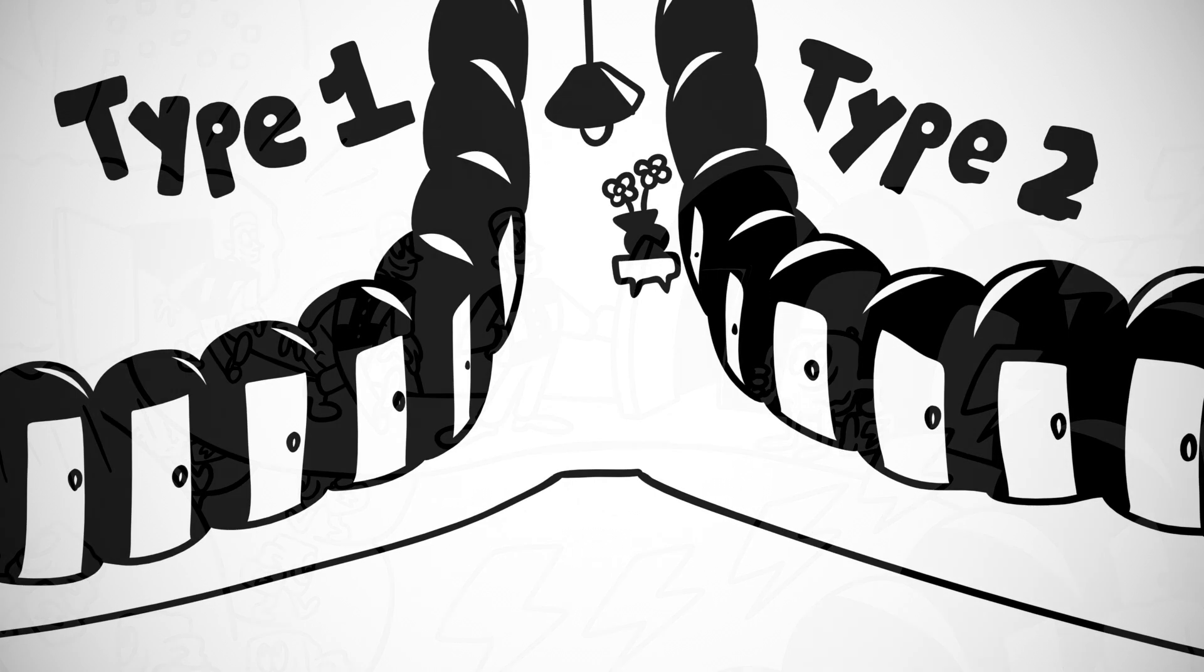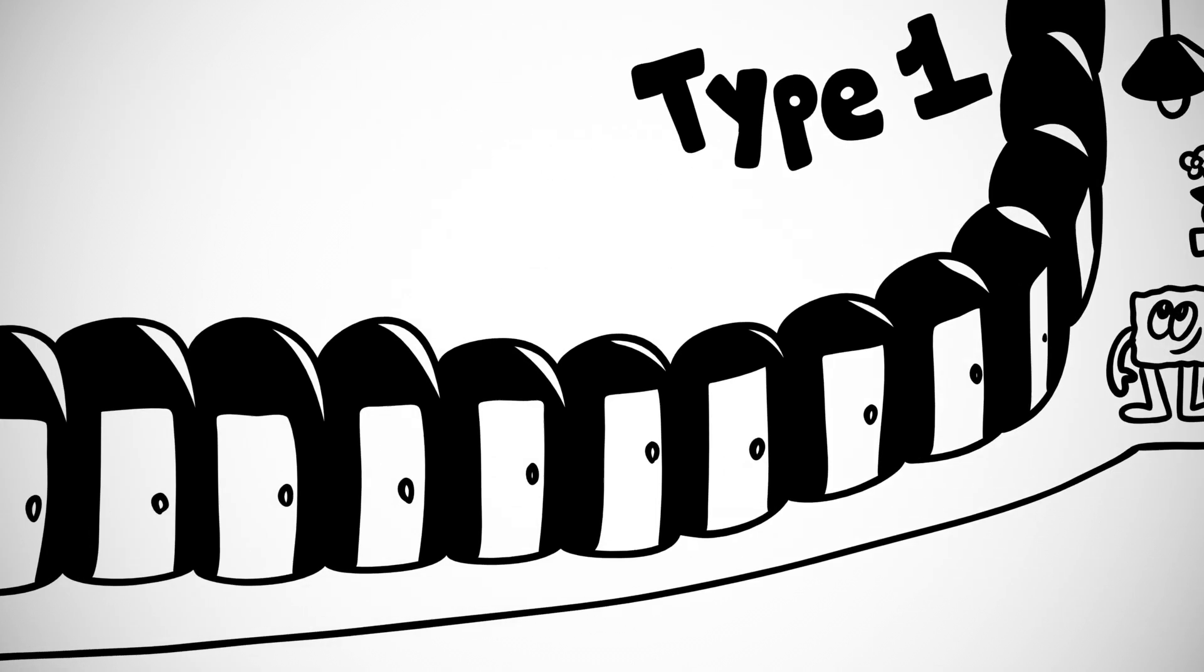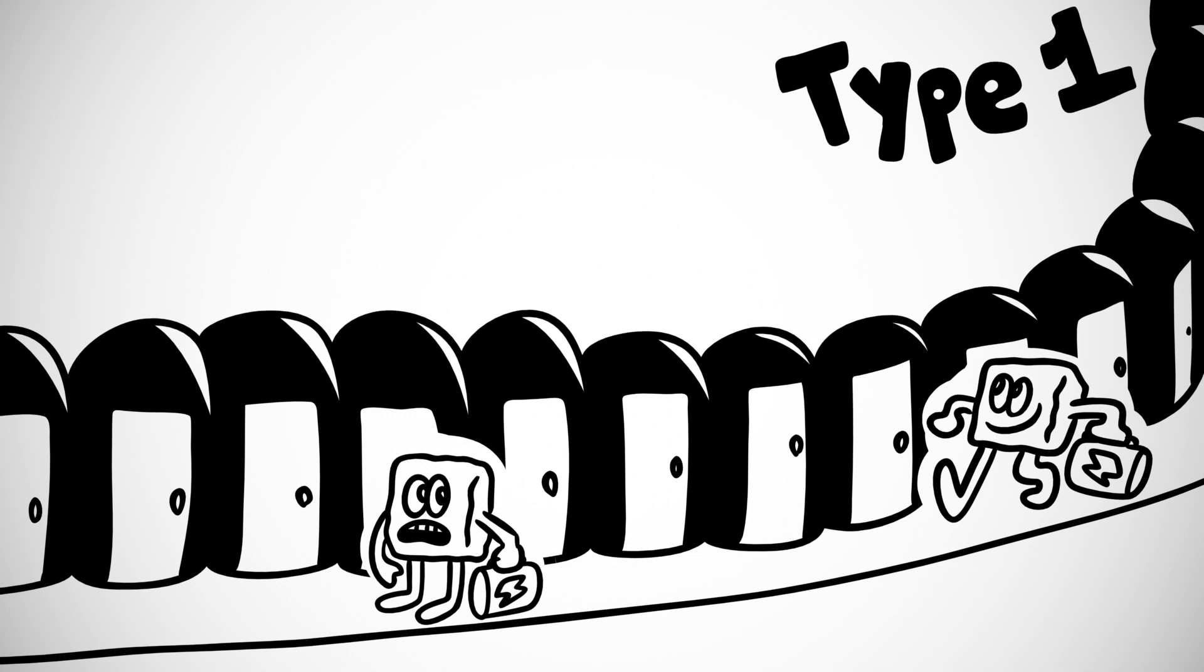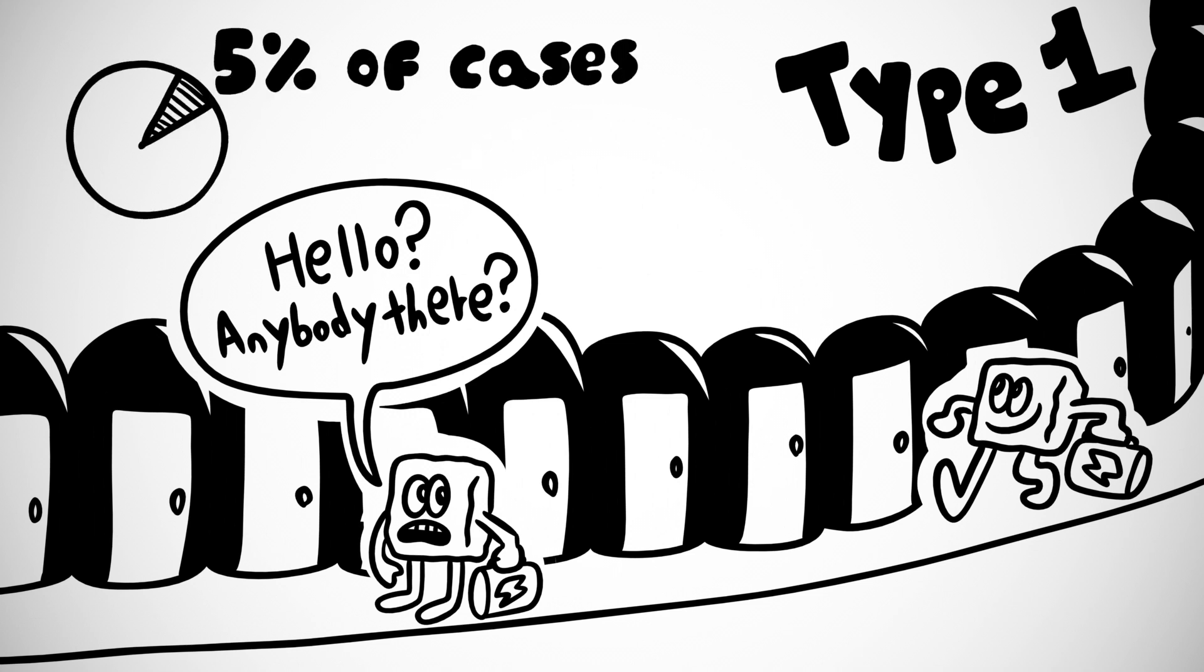There are two types of diabetes that disrupt this process in two different ways. In type 1 diabetes, the pancreas loses the ability to make insulin. This means that many of the doors stay locked, and less glucose can get into the cells. Type 1 diabetes makes up 5% of cases.